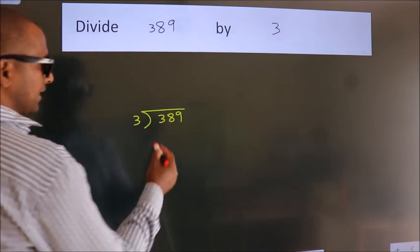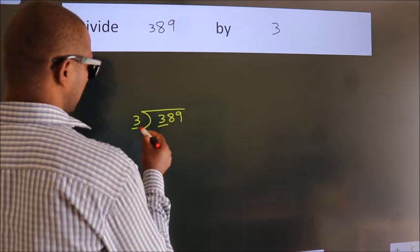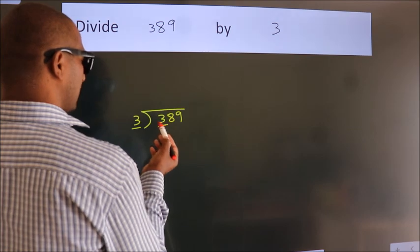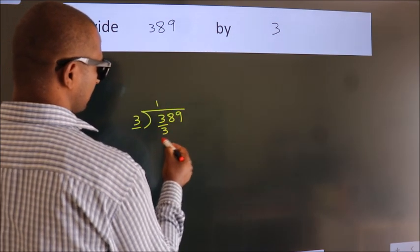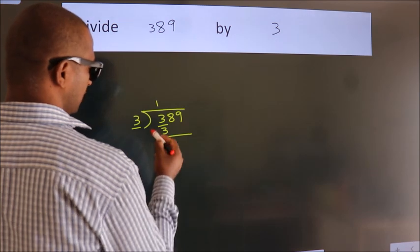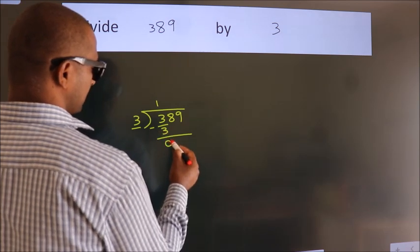Next, here we have 3. When do we get 3? In the 3 table: 3 once is 3. Now we subtract and get 0.